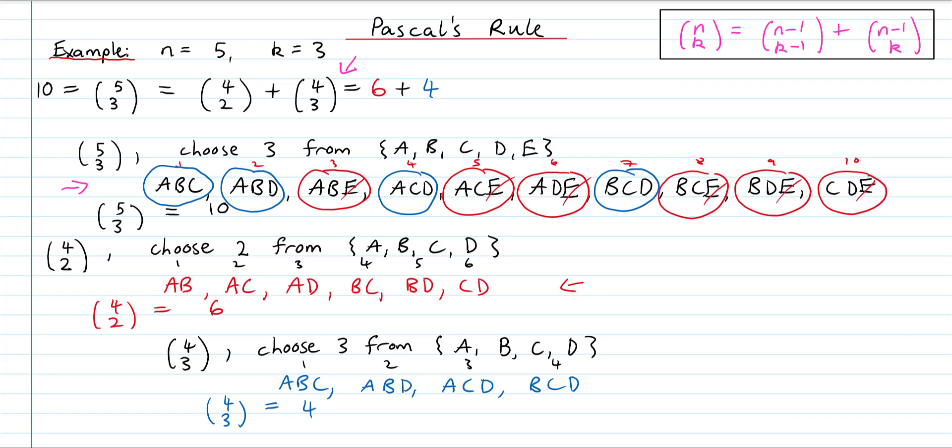Looking at the groups that don't contain E — ABC, ABD, ACD, and BCD — they match exactly with our 4 choose 3 list. The reason is: if we decide we do not want E in any of the groups, we still have 3 things left to choose, but only 4 elements left — A, B, C, D — to choose from. So there are 4 choose 3 ways of doing that.